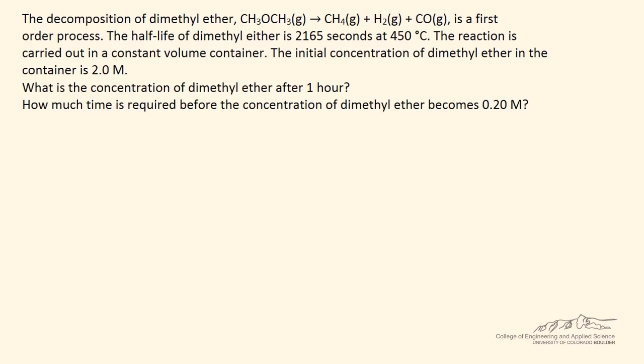I'll start by answering the first question by writing out the equation for a first-order process. I'll let A be equivalent to our dimethyl ether, so the equation becomes that the concentration of A equals the initial concentration times e to the negative kt, where k is the rate constant. We know A0 from the problem statement, and we want to find A at t equals 1 hour, so we need to find k.